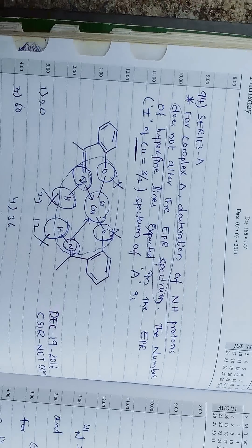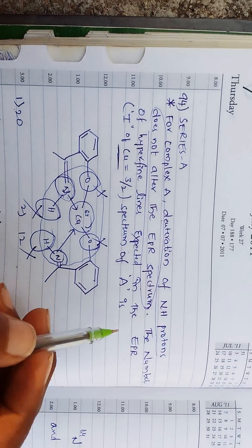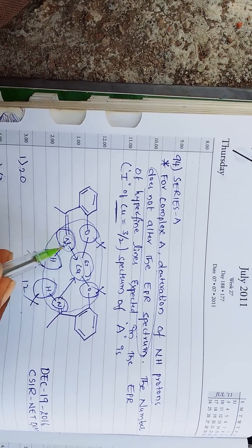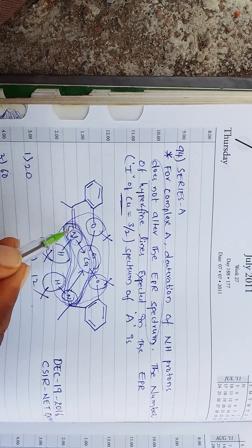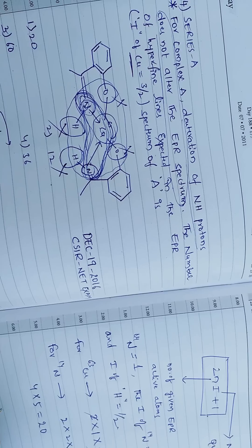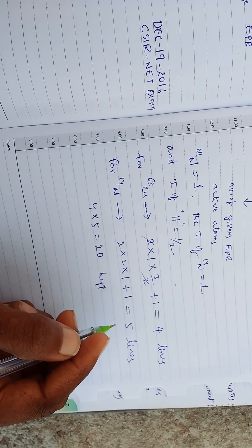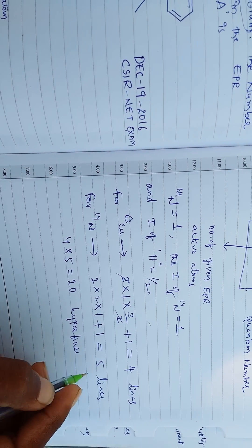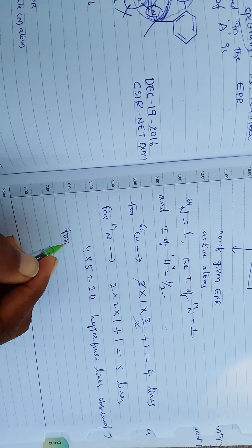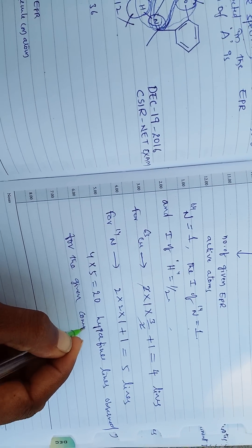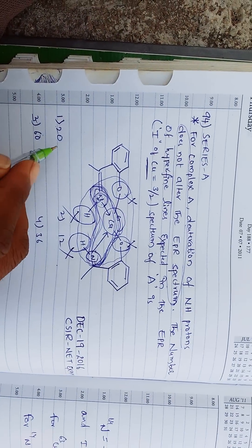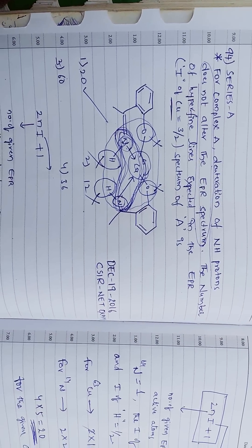The question asks for the number of hyperfine lines expected in the EPR spectrum. The interacting copper and nitrogen both contribute to the hyperfine splitting. So the total is 4 × 5 = 20 hyperfine lines observed for the given complex. The answer is 20, which is option 1. Thank you.